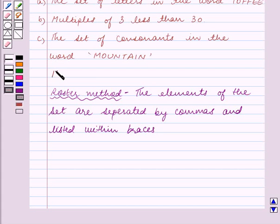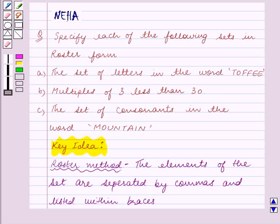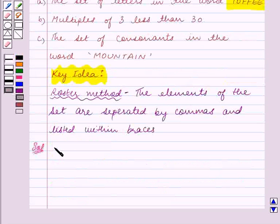So this is the key idea for this question, and using this key idea we will solve the question. Let's start the solution now. Part A is the set of letters in the word TOFFEE. So in part A, we are given the word TOFFEE.